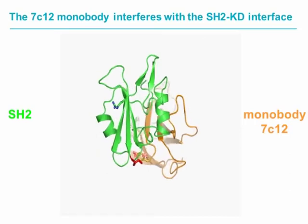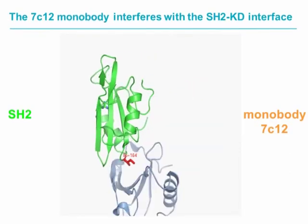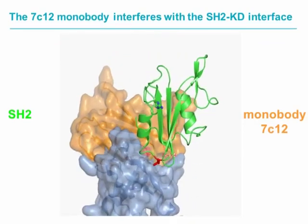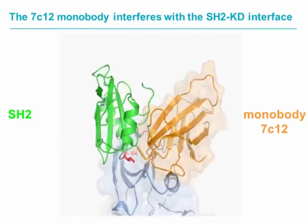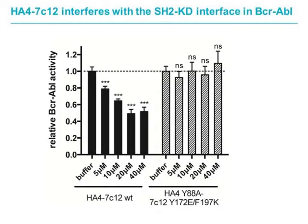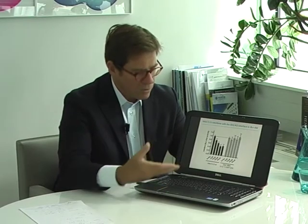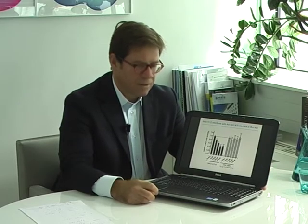Together with Shohei at the University of Chicago, we devised a monobody that actually engages the SH2 domain. This particular monobody binds to the side of the SH2 domain, and we hypothesized based on this crystal structure that it could clash with the catalytic domain. We used a tandem monobody that has another monobody fused at its amino terminus to increase affinity, and this tandem monobody is in vitro able to inhibit the catalytic activity of BCR-ABL.